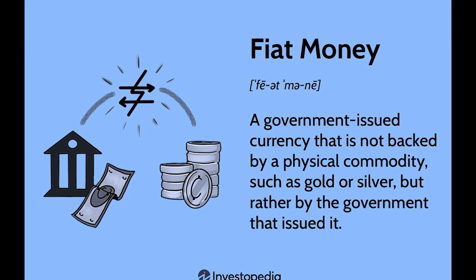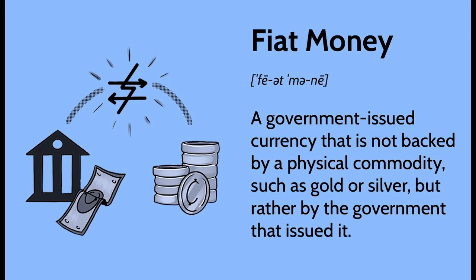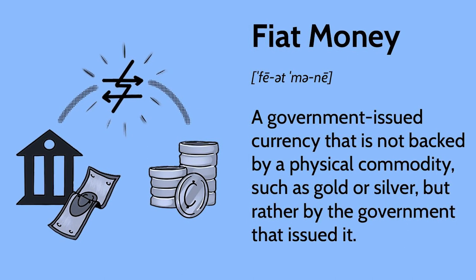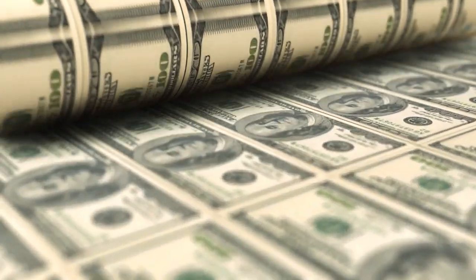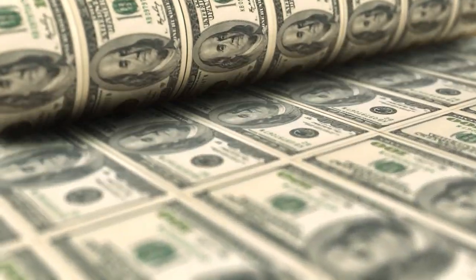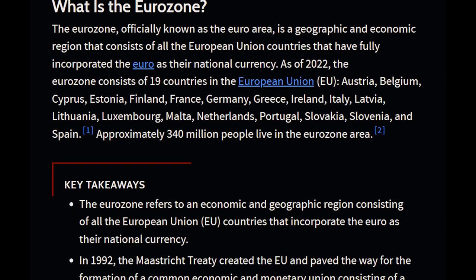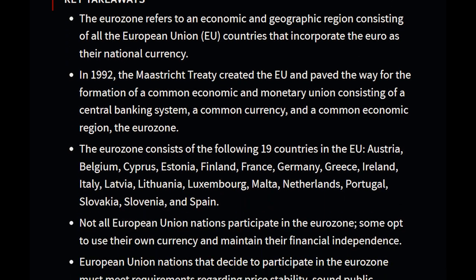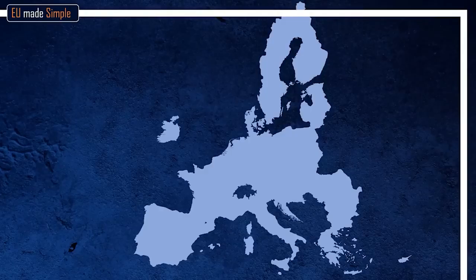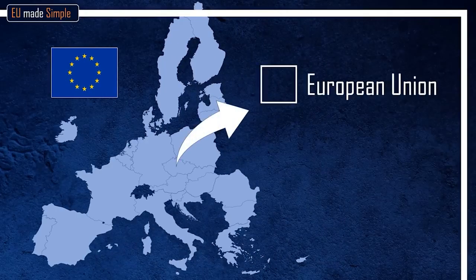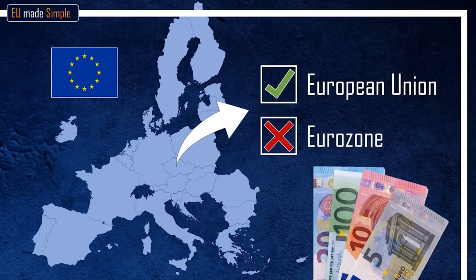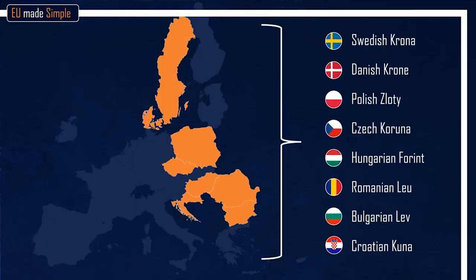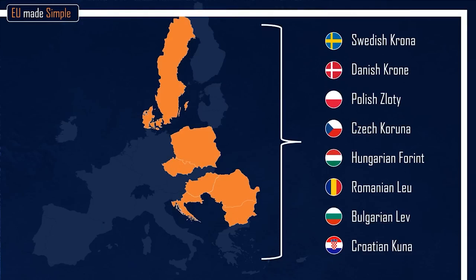Fiat money is not backed by physical reserves but by trust in the government that issues it. Thus began the era of printing money. Another monumental change was the creation of currency unions like the Eurozone — multiple nations adopting a single currency, in this case the euro, to facilitate easier trade and economic stability.